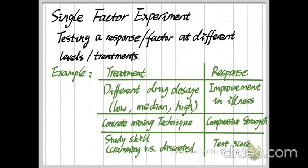In our last videos, we already talked about how we design experiments. We have several treatments, and here we focus on the effect of different treatments on the response. For example, if we have different dosages of a drug from low to medium to high, and we want to know the effect on a disease.